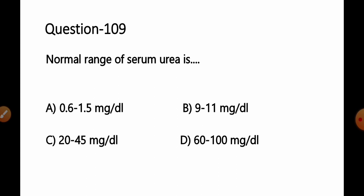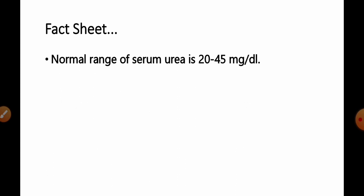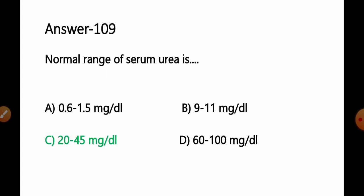Move to the next. Question number 109. Normal range of serum urea is option A. 0.6 to 1.5 mg per deciliter. B. 9 to 11 mg per deciliter. C. 20 to 45 mg per deciliter. D. 60 to 100 mg per deciliter. This question we have already discussed in our MCQ series and the correct answer for this question: normal range of serum urea is around 15 to 40 or 20 to 45 mg per deciliter. So we can say option C. 20 to 45 mg per deciliter will be the correct answer for this question.